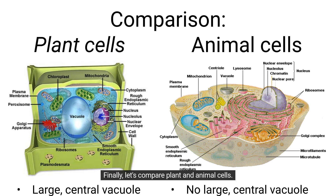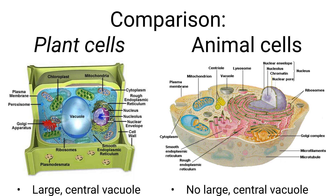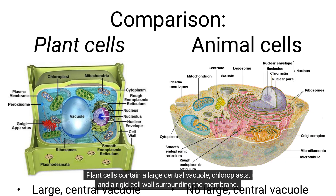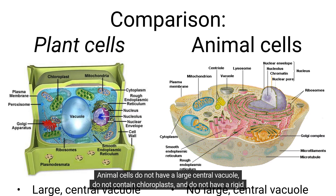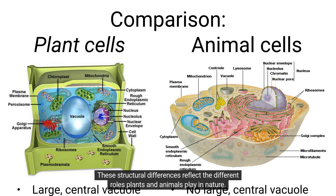Finally, let's compare plant and animal cells. Plant cells contain a large central vacuole, chloroplasts, and a rigid cell wall surrounding the membrane. Animal cells do not have a large central vacuole, do not contain chloroplasts, and do not have a rigid cell wall. These structural differences reflect the different roles plants and animals play in nature.